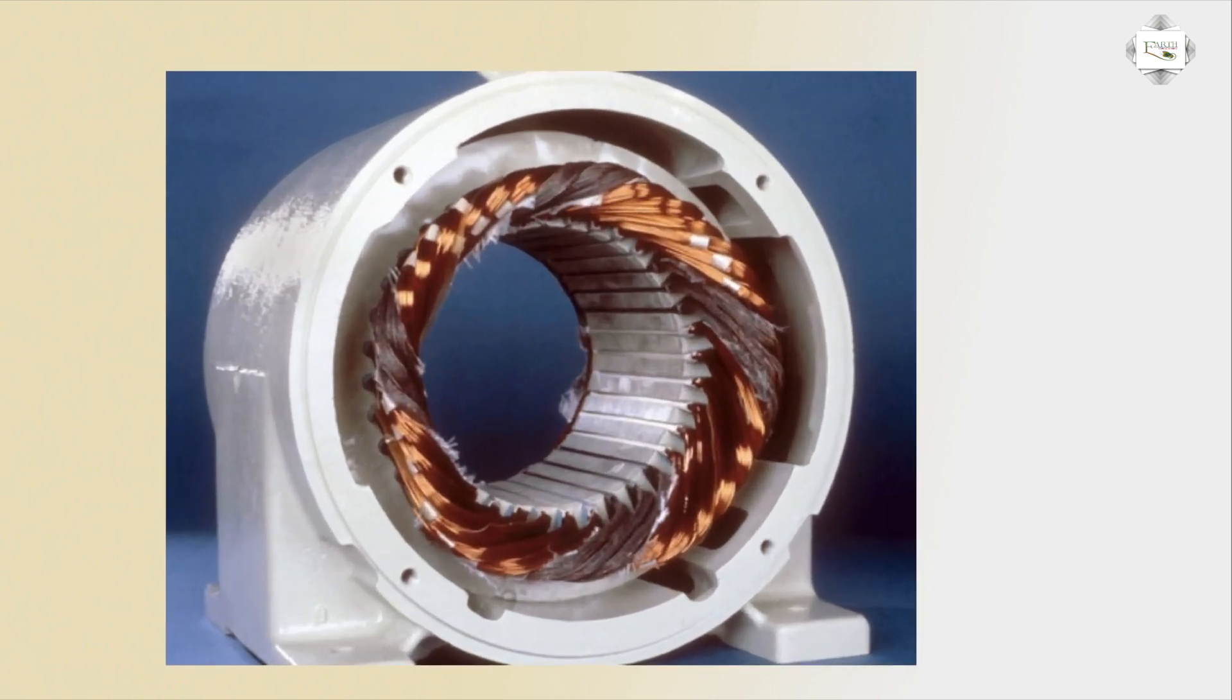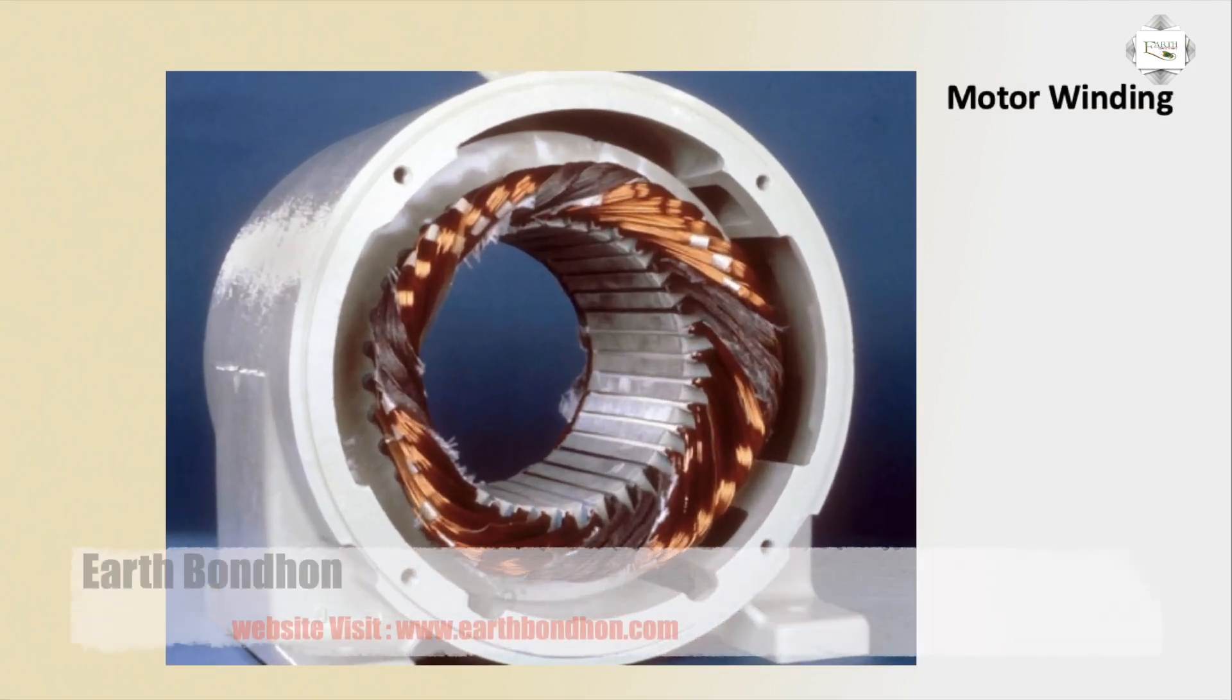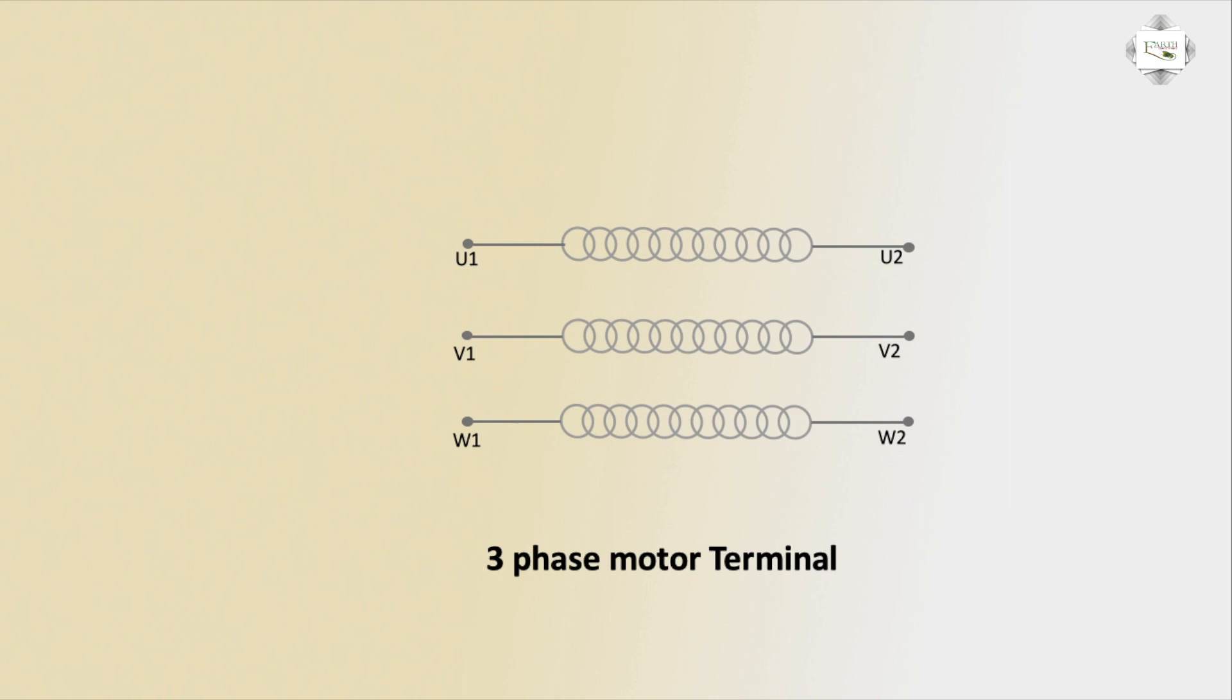This is the motor winding, a 3-phase motor winding. Every motor winding has two terminals. One winding has U1 and U2 terminals. It has three windings. This is the first and second winding, V1 and V2, and the last winding, W1 and W2. This is a 3-phase motor terminal.